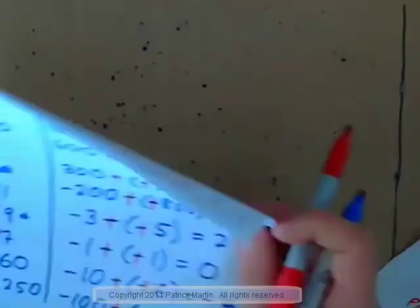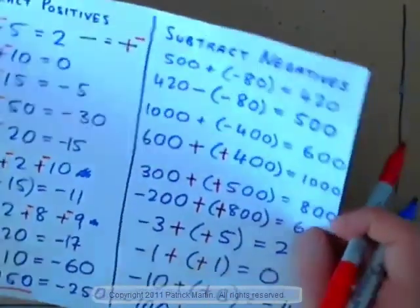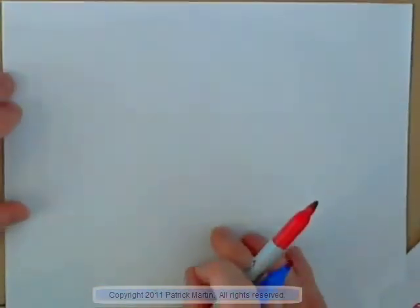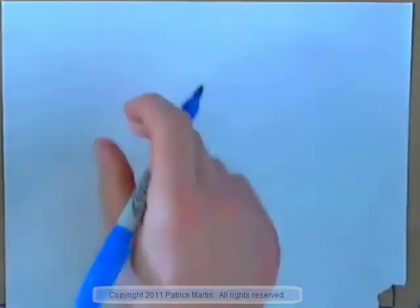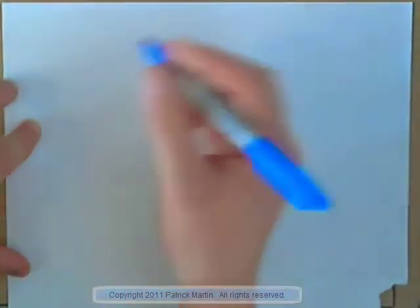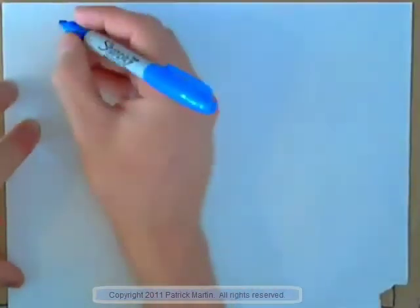Just to recap — and by the way, if you have to use a calculator for this, you will not get through the algebra sequence of classes. There has never been a student who got through college algebra needing a calculator to do these calculations. You have to know how to do negative numbers by hand. It's absolutely essential. So let's do them all by hand if you haven't been doing so already.